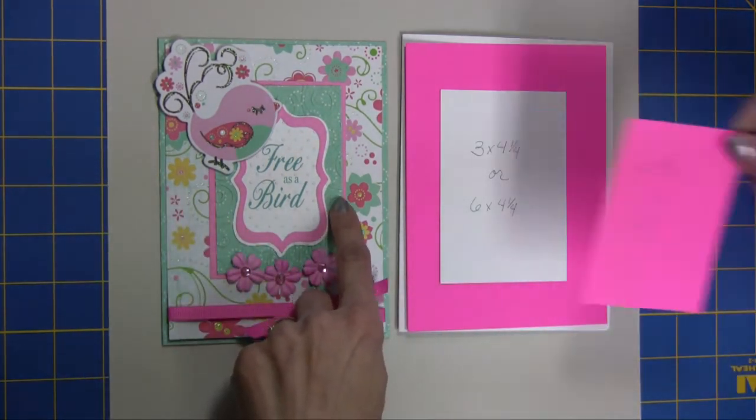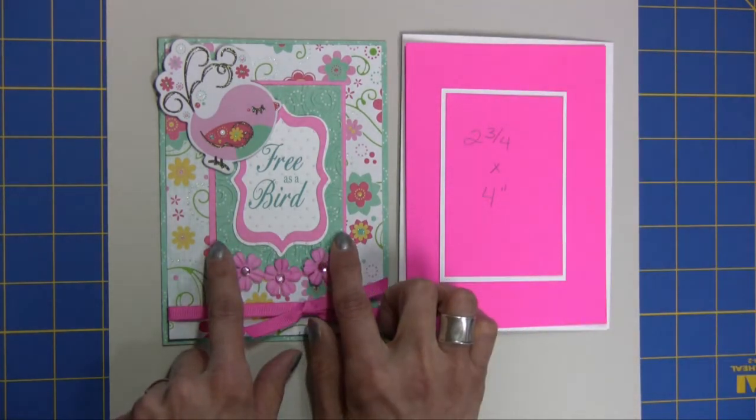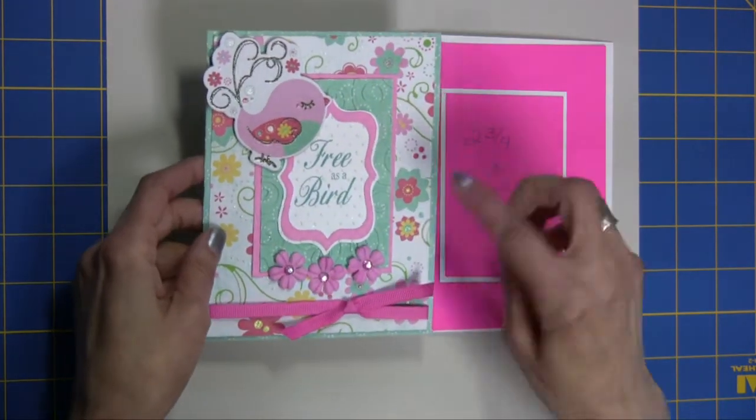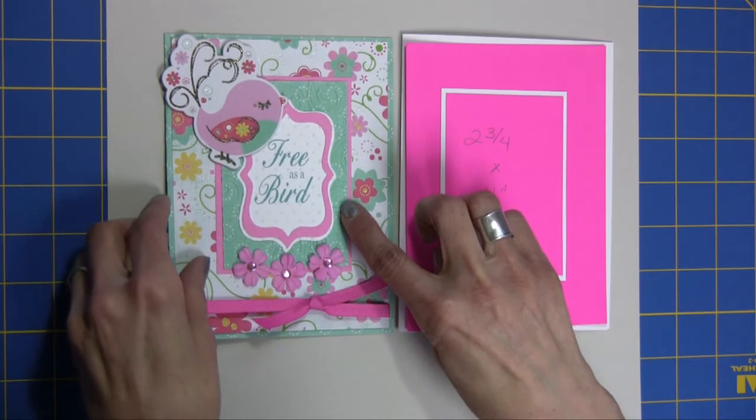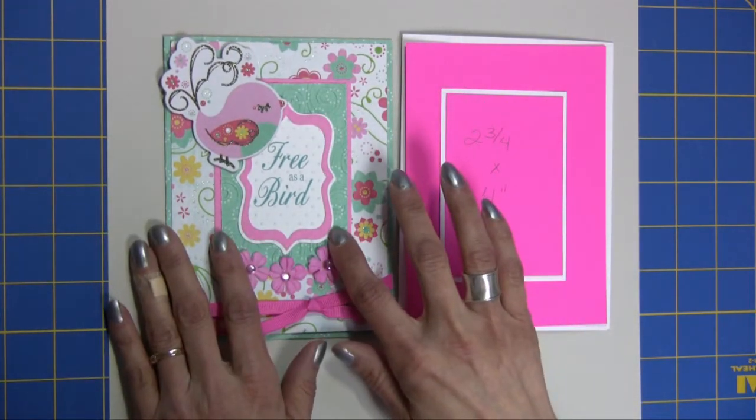The next layer, or the kind of the blue color, is two and three quarters by four inches. I tried an interesting technique using my Cuttlebug folder on this and did the swirls on top of the pattern paper and I really liked the look.